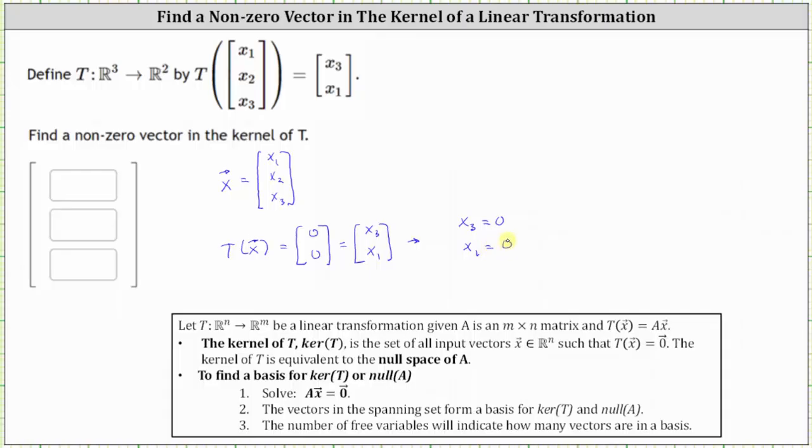Notice how x₂ does not appear in the output vector, and therefore x₂ can be any real number. Let's let x₂ be equal to t.